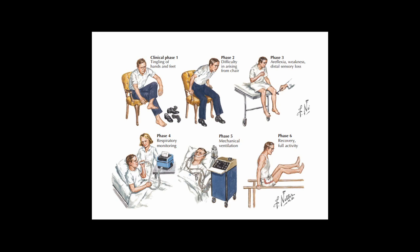Disease progression in GBS starts with sensory abnormalities — tingling of the hands and feet or loss of sensation — then progressive weakness making it difficult to get out of a chair and mobilize, with distal sensory loss and absent muscle reflexes. If the patient develops respiratory weakness, respiratory monitoring is required and mechanical ventilation may be needed. Following this, many — though not necessarily all — patients tend to recover.